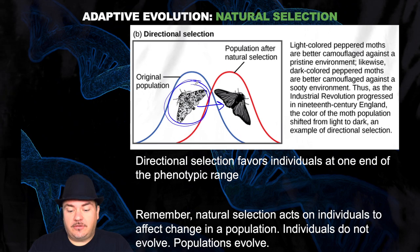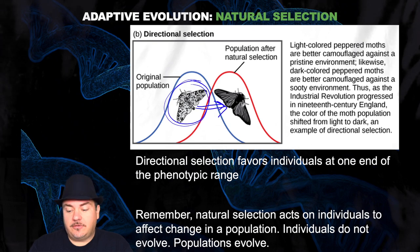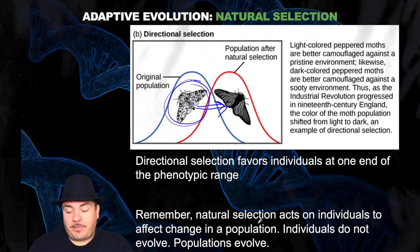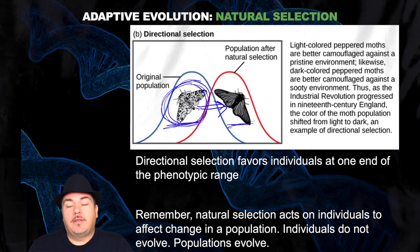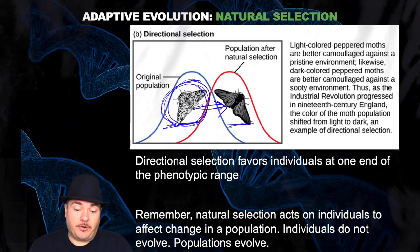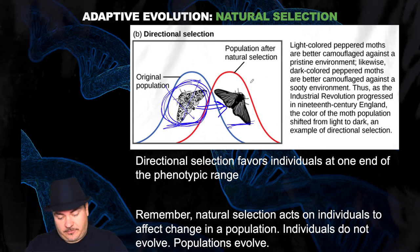That's directional selection — the selection is moving in one particular direction, in this case from lighter colored to darker colored. Directional selection favors individuals at one end of the phenotypic range. Natural selection acts on individuals to affect change in a population; individuals do not evolve, populations evolve. These lighter colored moths didn't say they'd better turn darker — just by chance, there are lighter colored moths born and darker colored moths born. The lighter colored moths are now at a disadvantage because they're going to get eaten by the birds, so they happen to be killed off. The darker colored moths have an advantage — they can hide better. So over time, the population becomes darker and darker patterns.